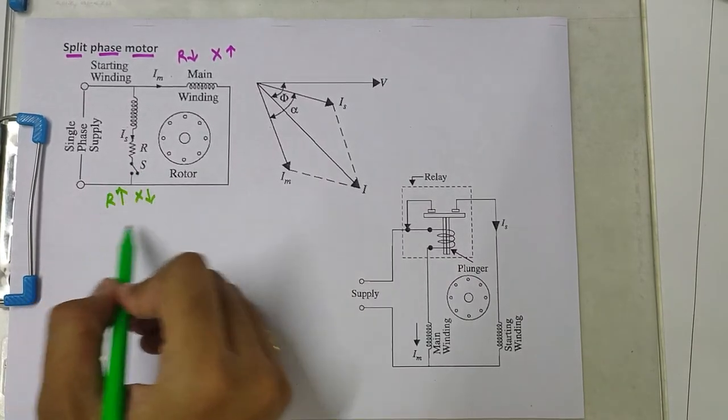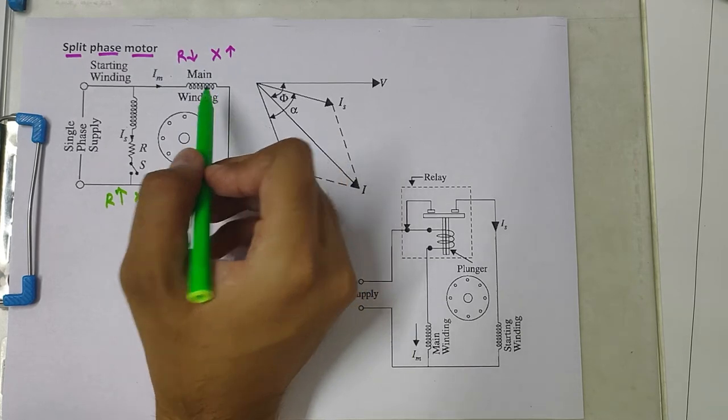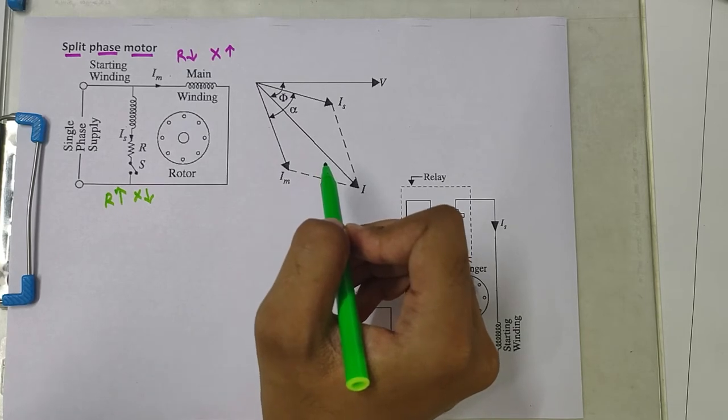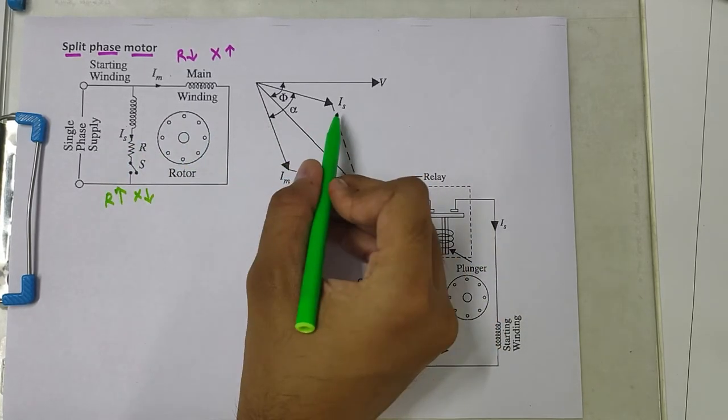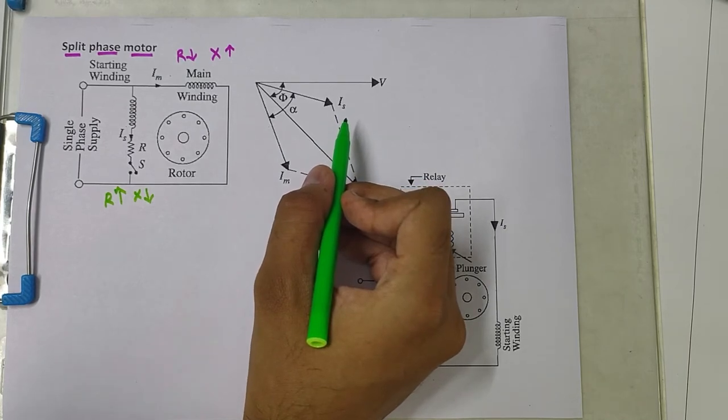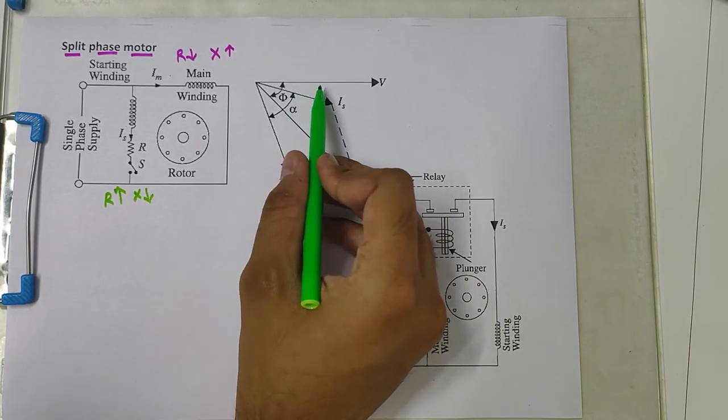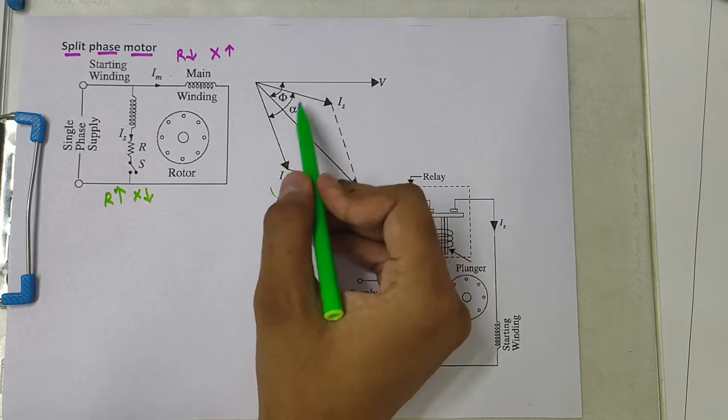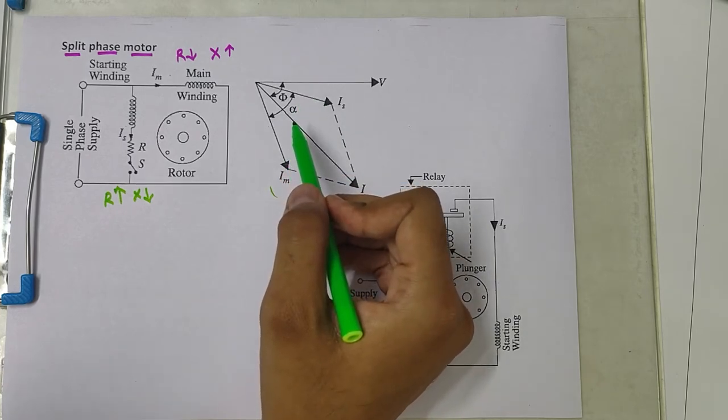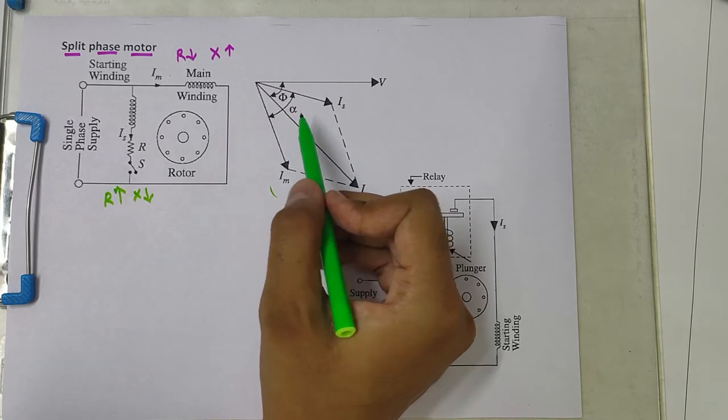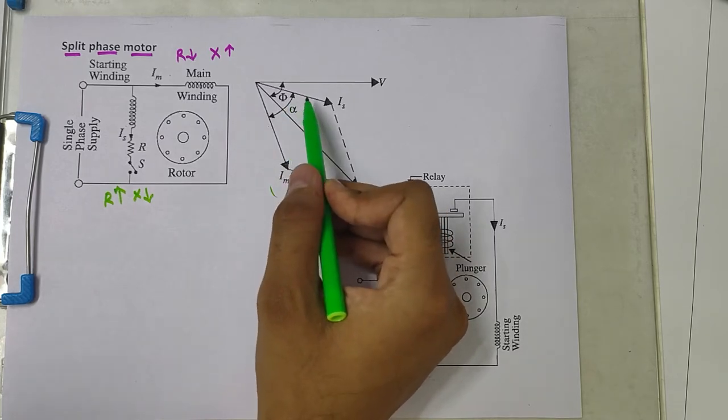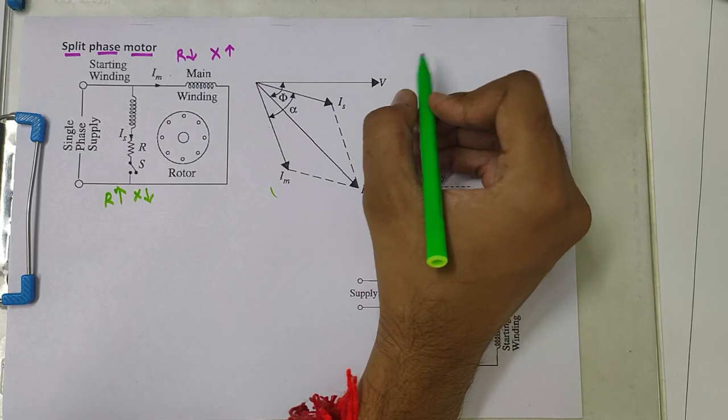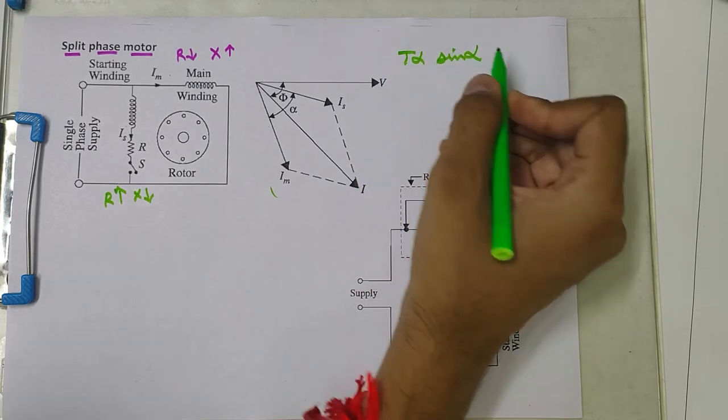So because of this change in resistance and reactance of the main winding and starting winding, as you can see in the phasor diagram, the current drawn by the starting winding which is indicated by IS lags behind the applied voltage by a small angle, whereas the current of the main winding indicated by IM lags with the applied voltage by a large angle. The phase angle between IS and IM is made as large as possible. The alpha must be as large as possible because the torque of a split phase induction motor is directly proportional to sin alpha.